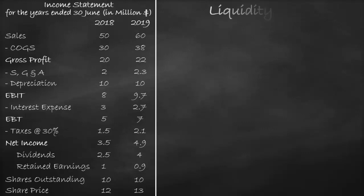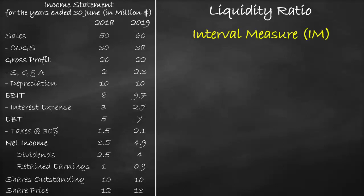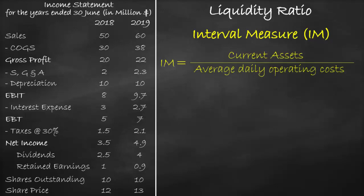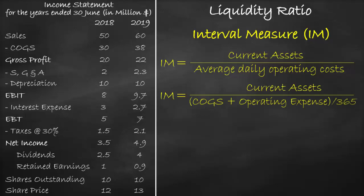An example of the liquidity ratio is the interval measure ratio. The interval measure formula is current assets divided by average daily operating costs. Average daily operating costs are calculated as the cost of goods sold plus the operating expense divided by the number of days in the year, which is 365. So we can rewrite the interval measure formula as current assets divided by cost of goods sold plus operating expense, divided by 365.